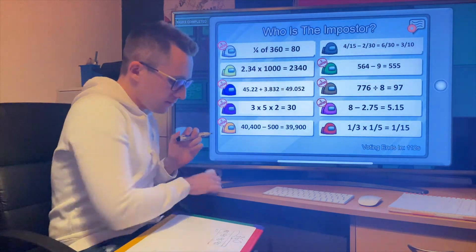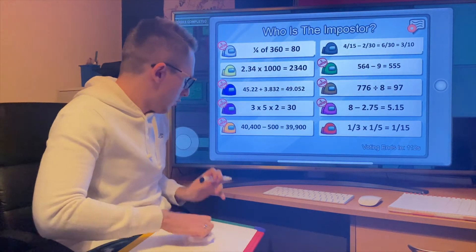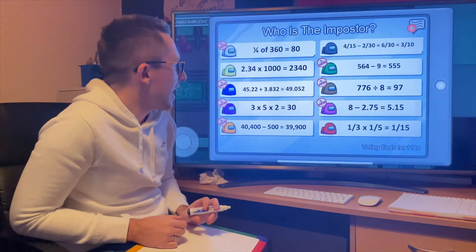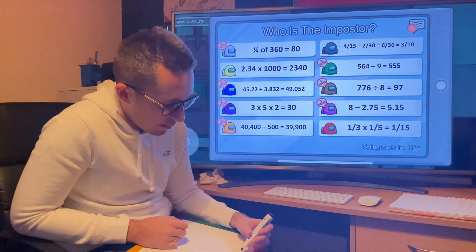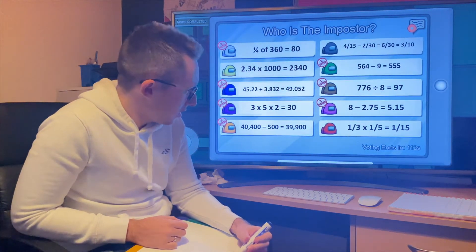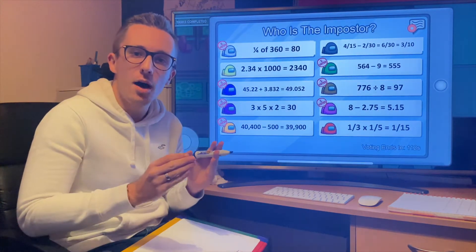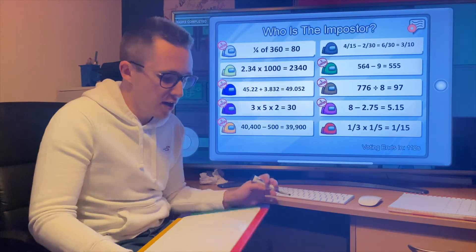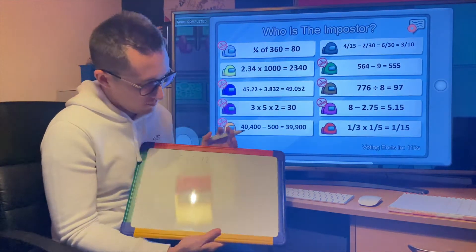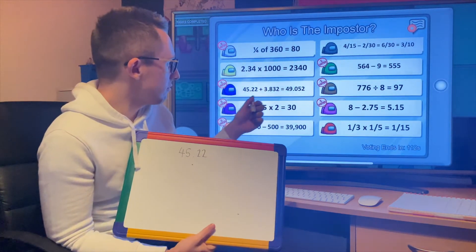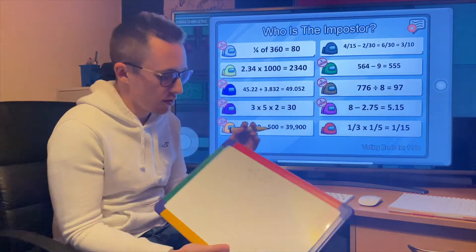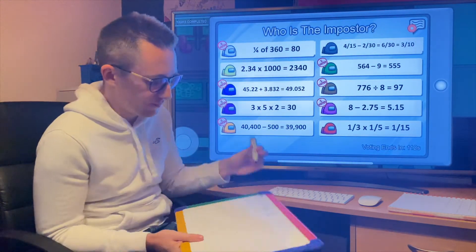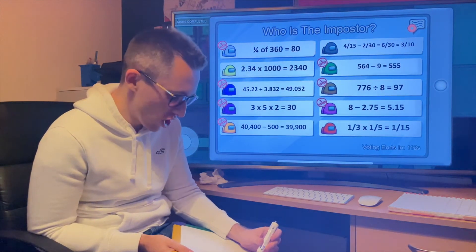Let's move on to the next. Yellow: 2.34 times a thousand is 2,340. Yes, it is. Blue: 45.22 add 3.832. We're gonna have to lay that one out. I'm going to start with my 45.22. Now it's really important here we line up the digits because if we line them up wrong, we're going to get this wrong. The easiest way to do that is to line up the decimal points because the decimal points are always in the same place. The 3 is on the left of the decimal point, so I'm going to put that underneath the 5. Then 832 is going to go here.